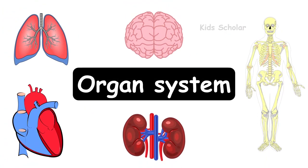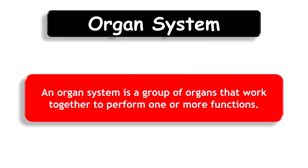Organ System. An organ system is a group of organs that work together to perform one or more functions.